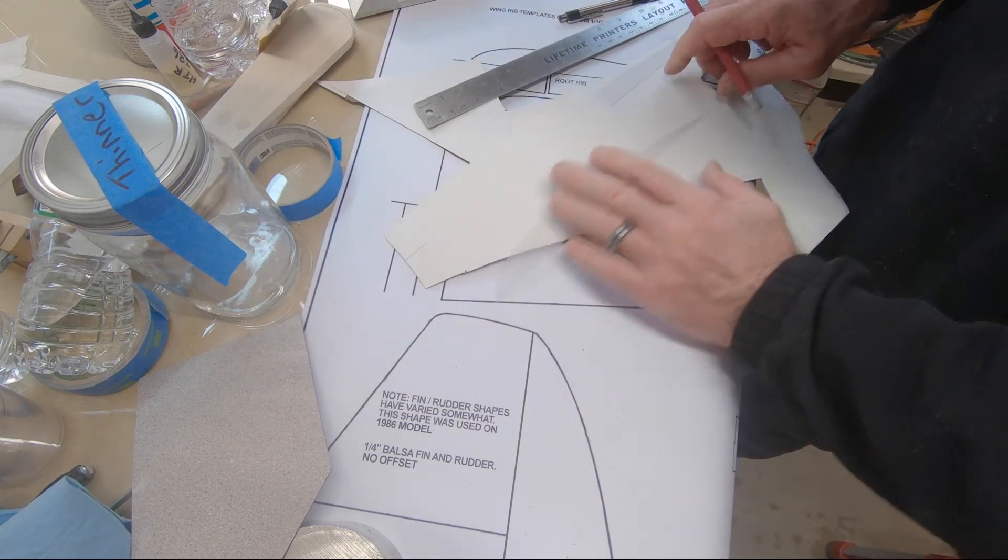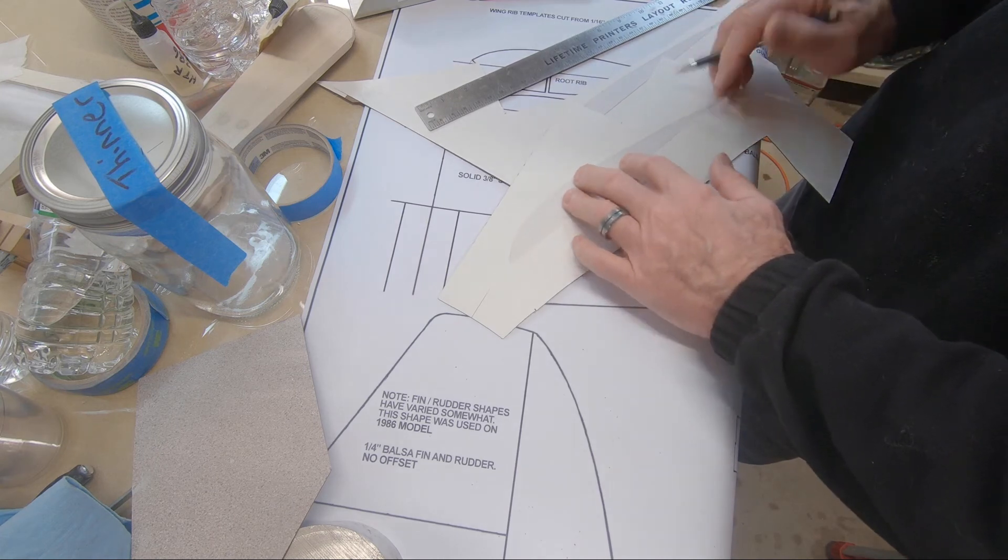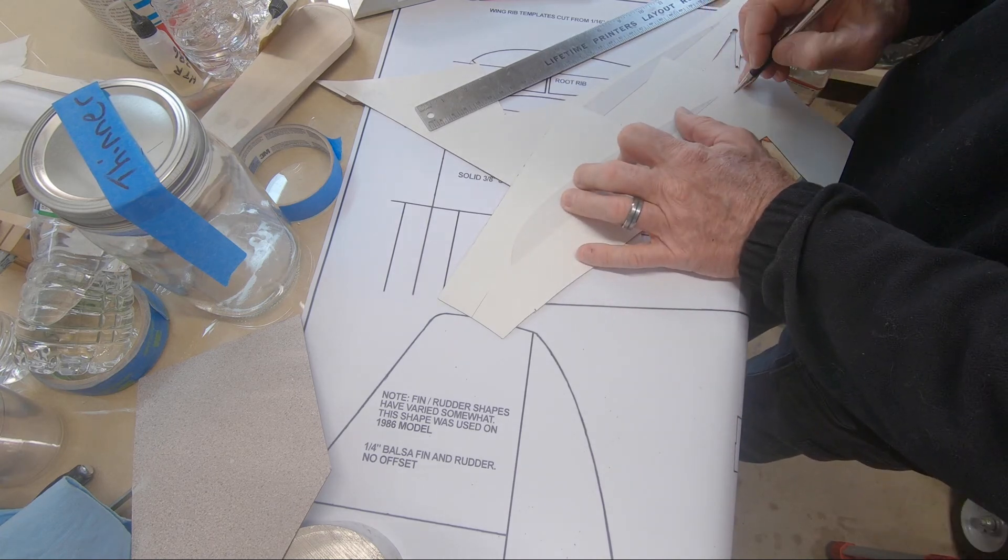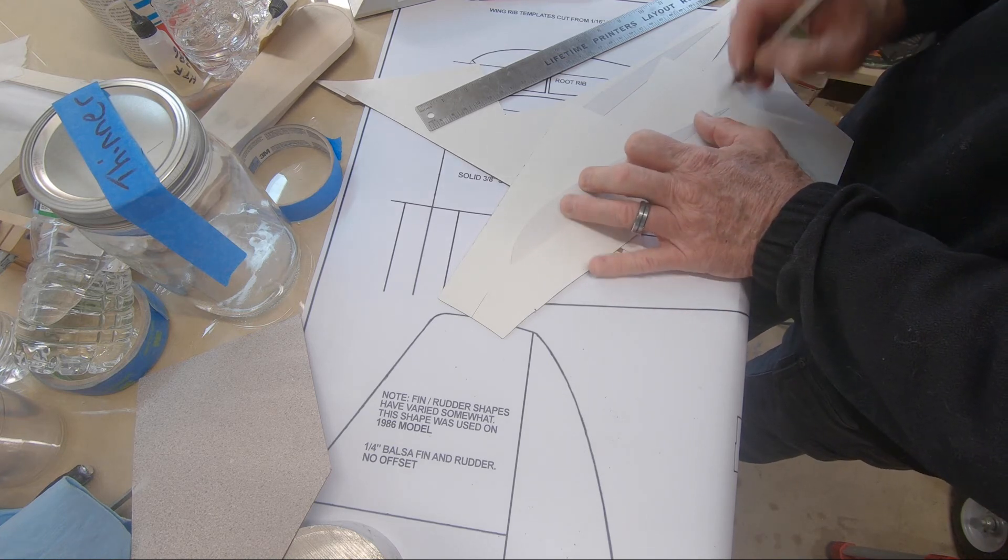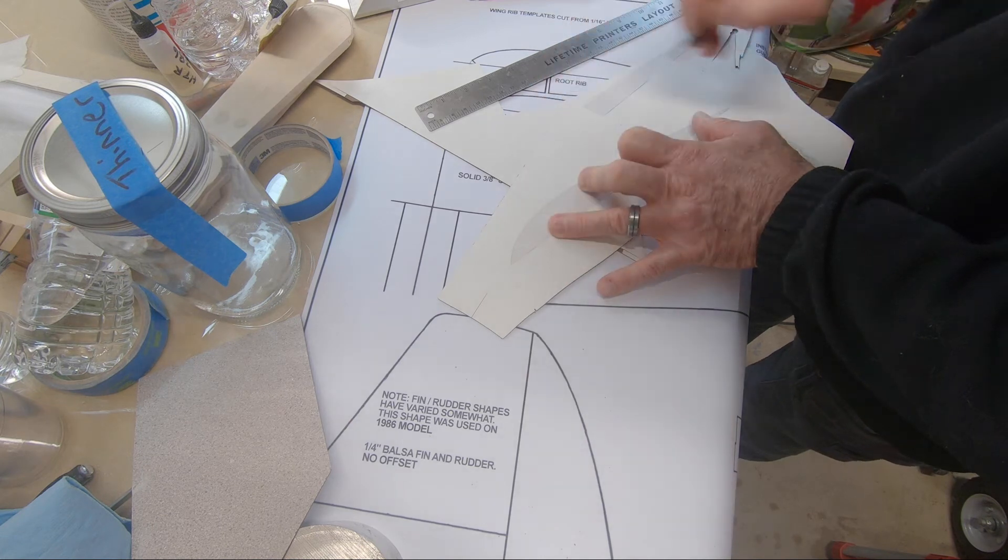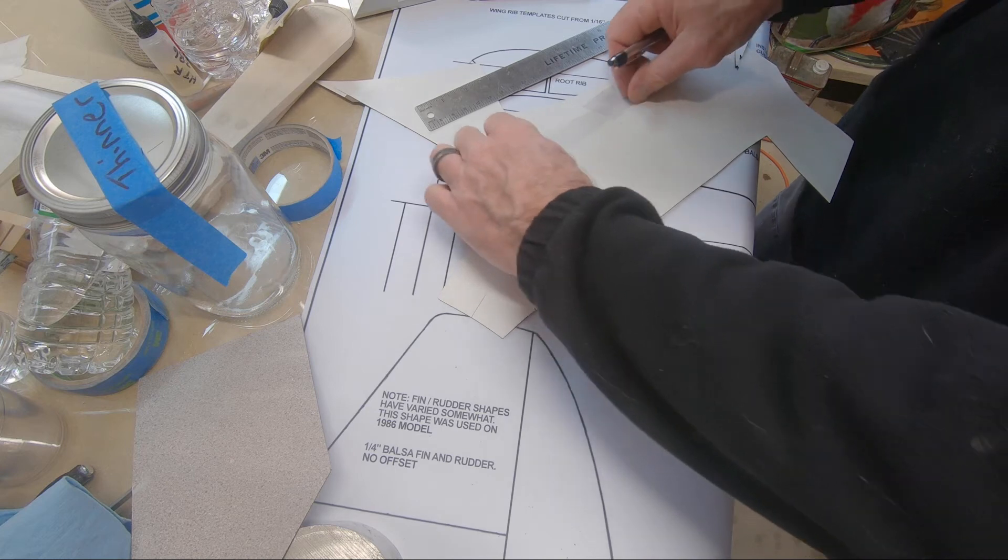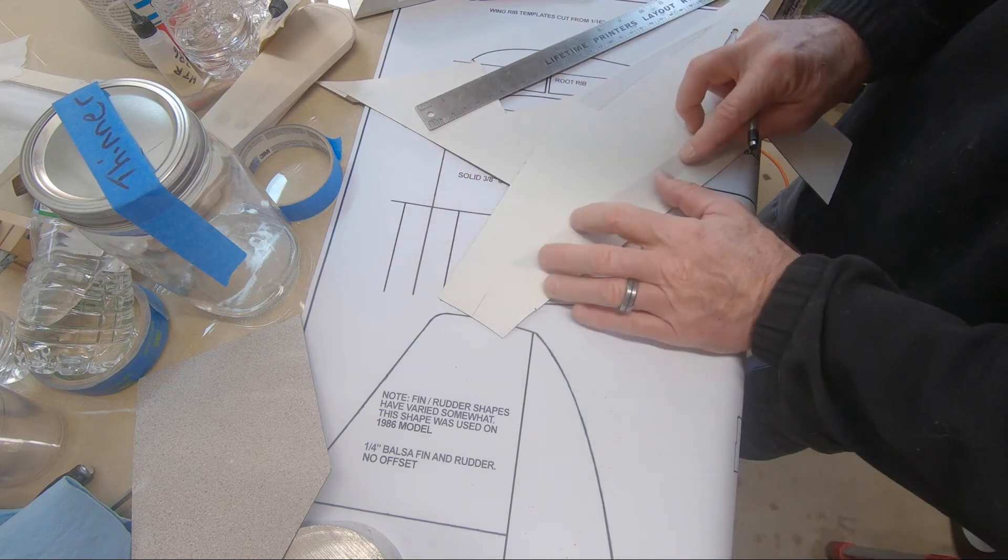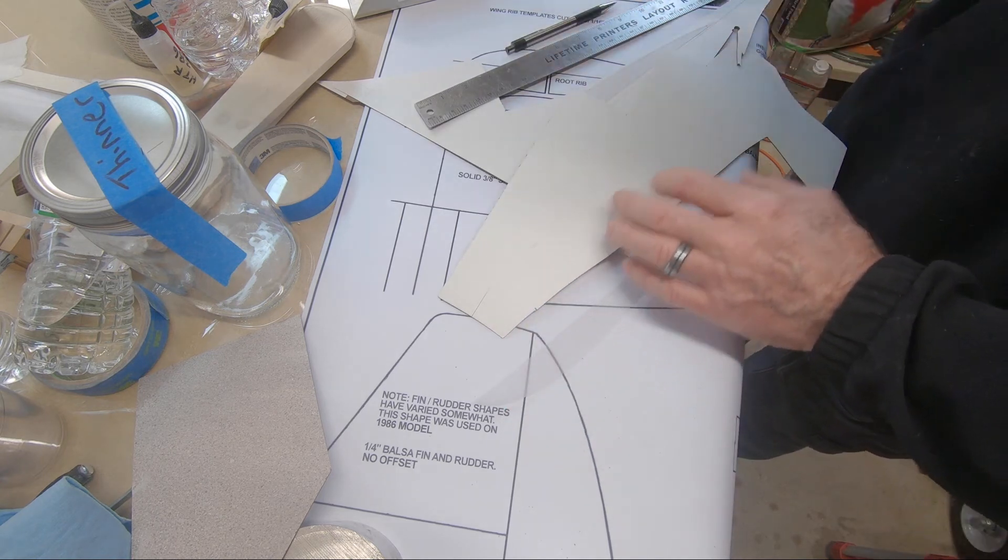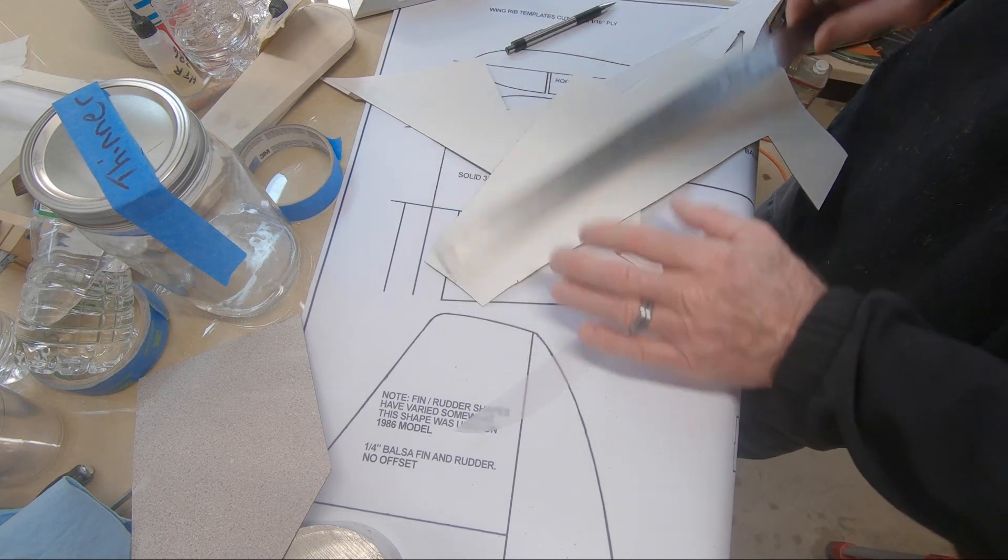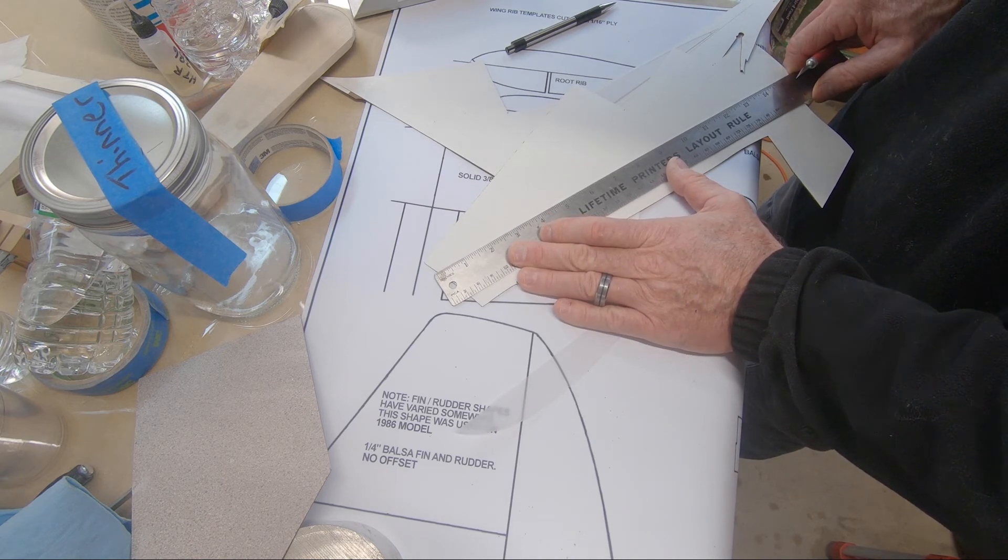And I'll do the same thing here on the root. I'll lay this thing out and make sure I've got enough room. So I mark it with a pen. Roughly how long I scribe it. Make sure I have enough room. And do the same thing here for the root template.